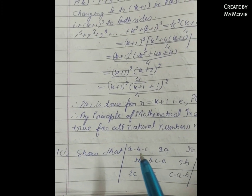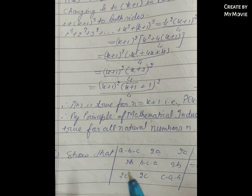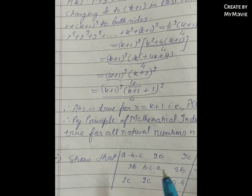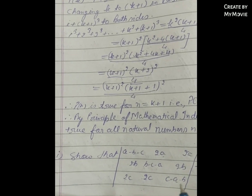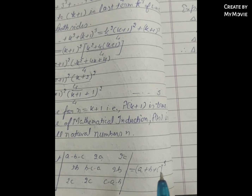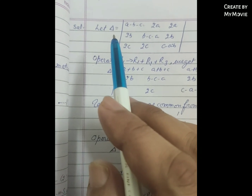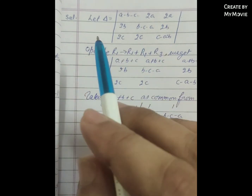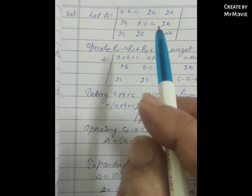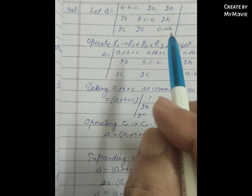Show that the determinant of the matrix with entries: (a−b−c), 2a, 2a / 2b, (b−c−a), 2b / 2c, 2c, (c−a−b) is equal to (a+b+c)³. Let delta be the given determinant.